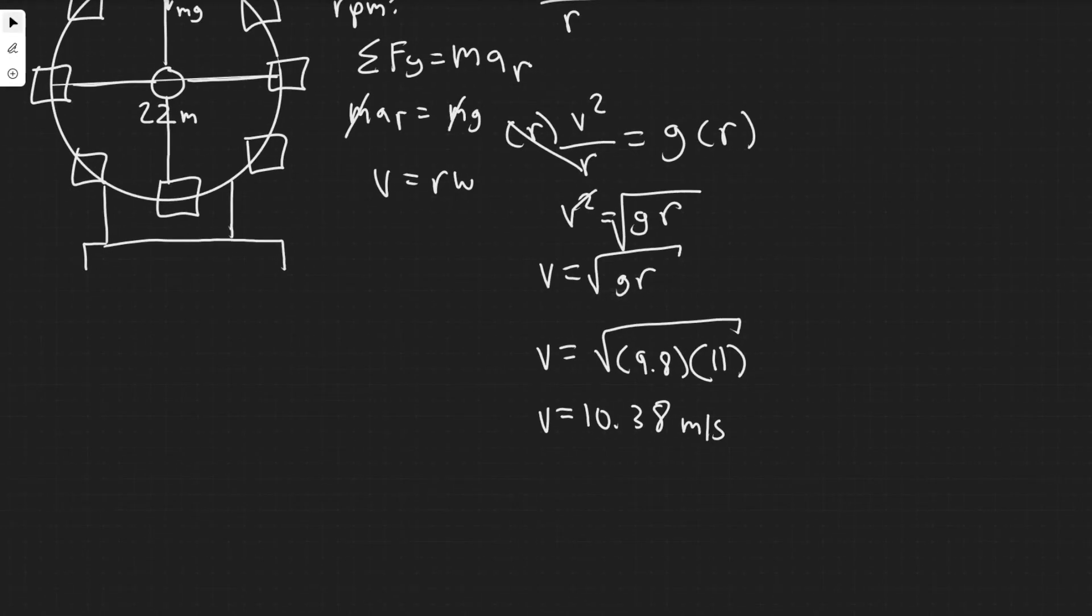And then now what we're going to want to do is convert into radians per second, which takes the velocity. And then you would just divide by the radius here to get it.